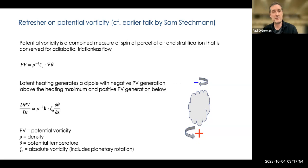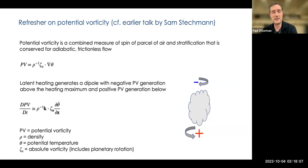I'll give a brief refresher on potential vorticity since I'll be using that a lot. Potential vorticity, or PV, is a combined measure of the spin of a parcel of air and stratification. It's conserved for adiabatic frictionless flow. It involves the absolute vorticity and the gradient of theta, which mostly matters in the vertical — the vertical gradient of theta is the largest part.